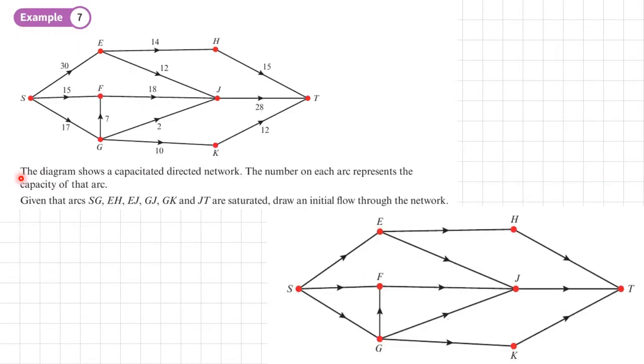Example 7. The diagram shows a capacitated directed network. The number on each arc represents the capacity of that arc. Given that arcs SG, EH, EJ, GJ, GK, and JT are saturated, draw initial flow through the network. OK, so here's my completed diagram.